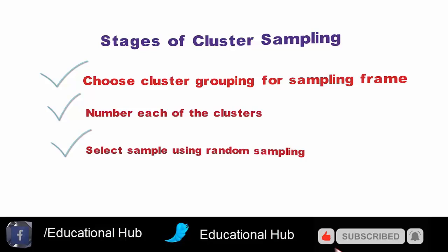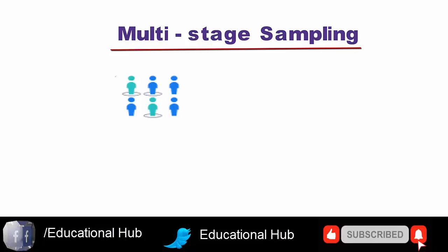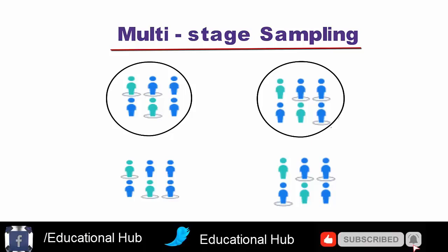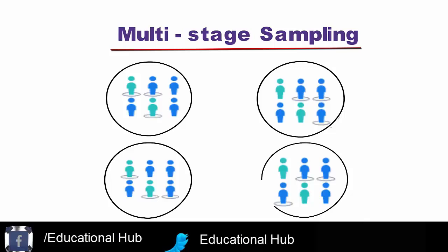5. Multi-stage sampling. Multi-stage sampling is a process of moving from a broad to a narrow sample using a step-by-step process. For example, if an American publisher of an automobile magazine were to conduct a survey, it could simply take a random sample of automobile owners within the entire American population.